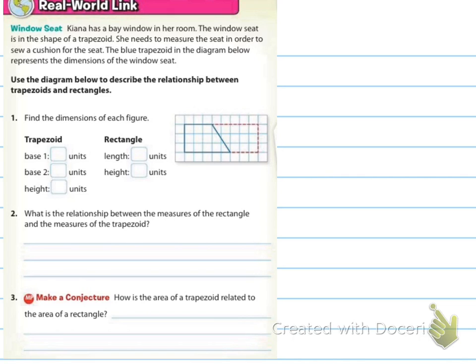It says find the dimensions of each figure. I like how they took both of the trapezoids and flipped one upside down and put it right up against it, and then it made a parallelogram. Well, now in this case it's making a rectangle. Since we have this right angle right here, it becomes a rectangle.